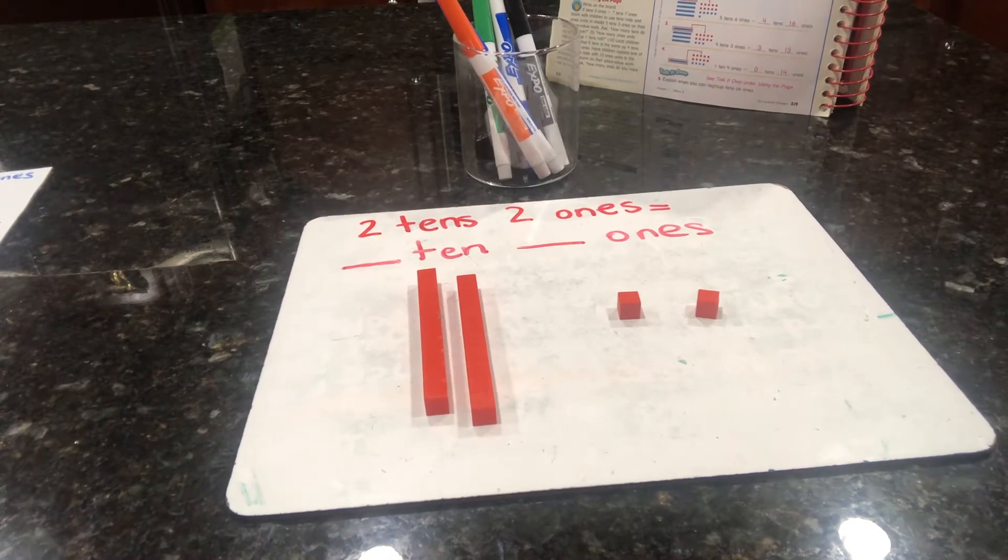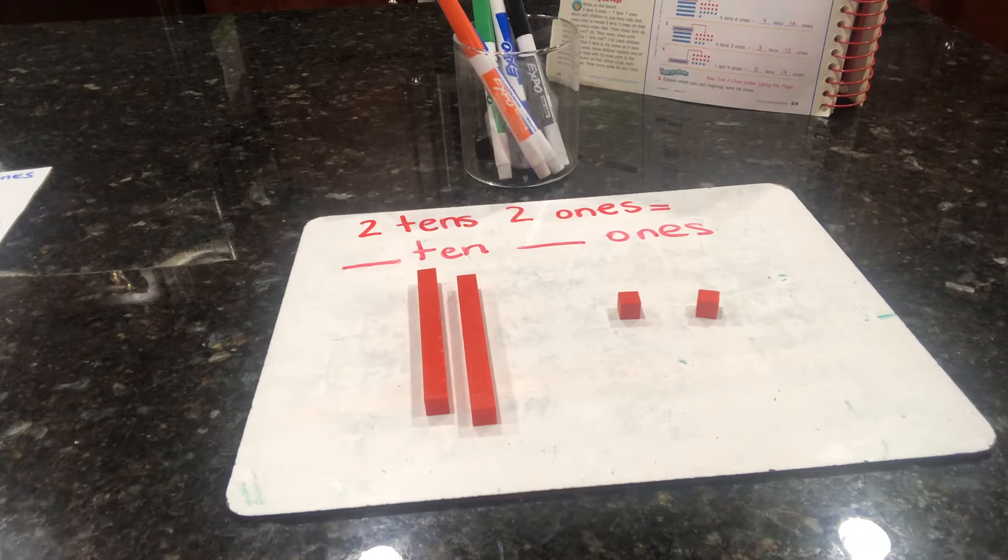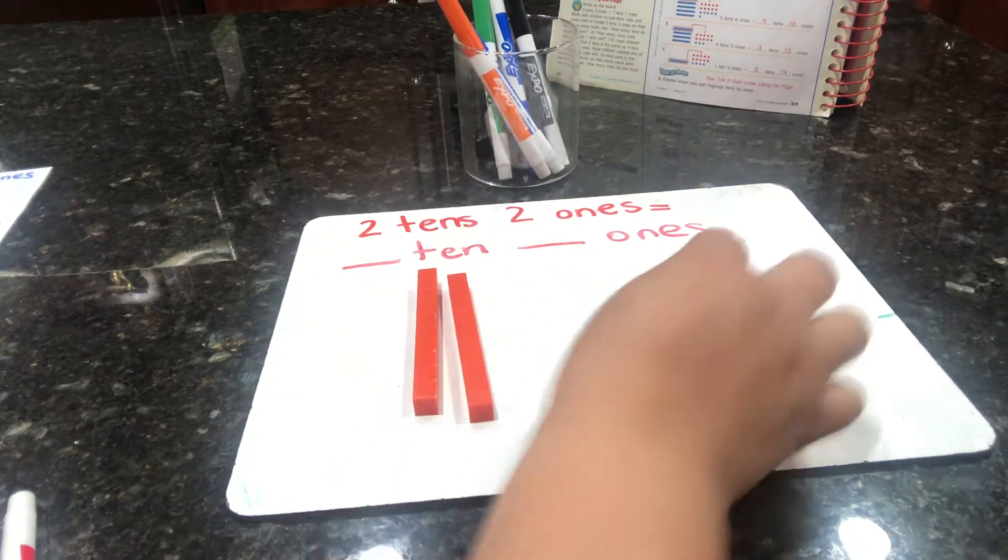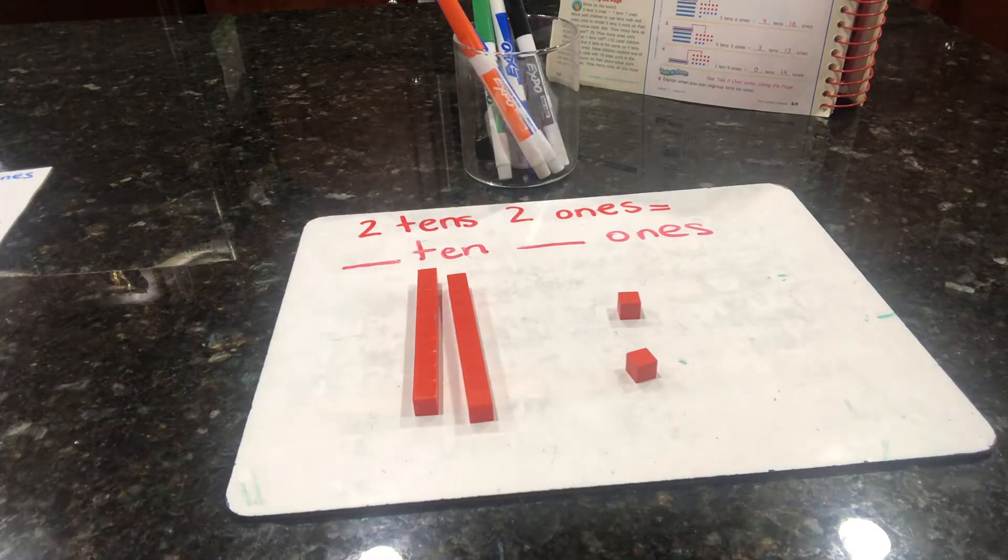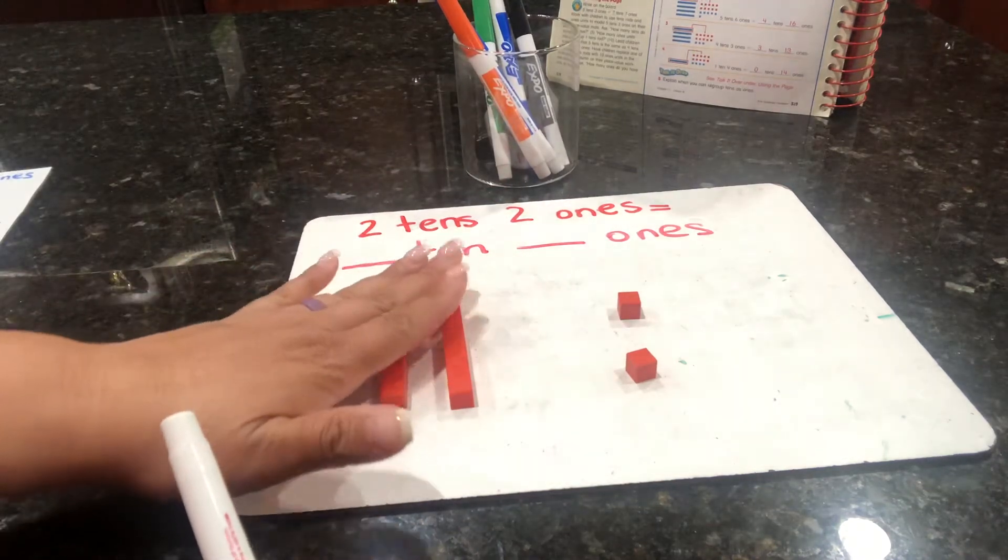Today we are regrouping tens as ones using models. Let's take a look at page 519. Remember, these are your tens rods and these are your ones units. Number one says two tens two ones.